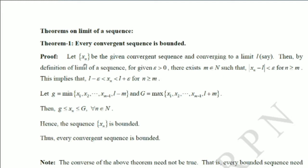The first theorem is: every convergent sequence is bounded. We are given a convergent sequence and need to show it is bounded. A sequence is said to be convergent if the limit of the nth term is finite and unique — that is, limit as n tends to infinity of xn equals some value l. We have to show this sequence xn is bounded.